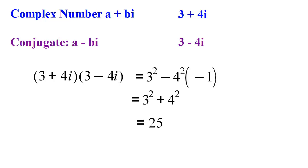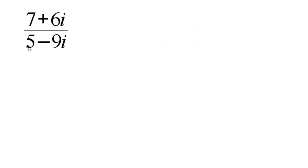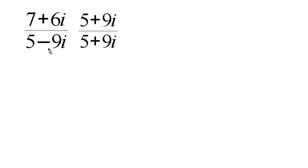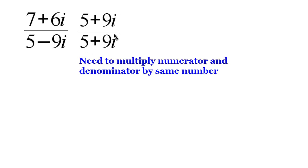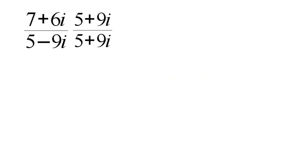One use of this is in finding the quotient of a complex number. For example, if we want to take 7 plus 6i divided by 5 minus 9i, we need the conjugate of the denominator to turn it into a real number. The conjugate of 5 minus 9i has the same real part but opposite imaginary part, so it is 5 plus 9i. Since this is algebra, we must do the same thing to the top and the bottom — we multiply by the conjugate over itself, which equals 1, and then multiply the numerators and denominators.